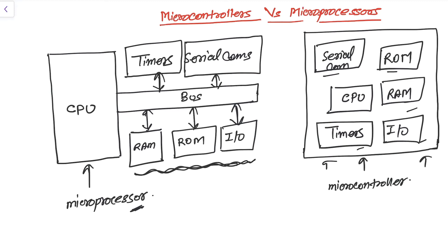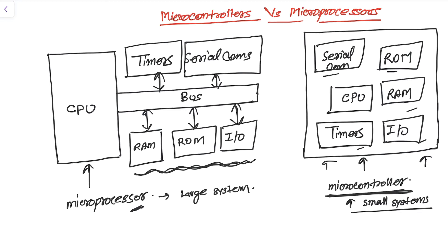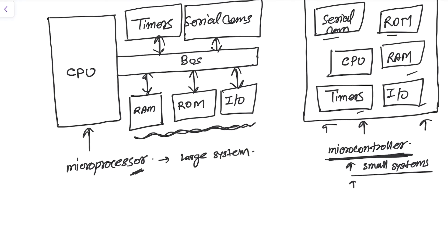Once the microcontroller has been built and manufactured, the programmer cannot change any of these peripherals — everything is already fixed. Microcontrollers are used in small systems and perform only a specific, fixed number of tasks, whereas microprocessors are part of large systems and handle a large number of tasks.